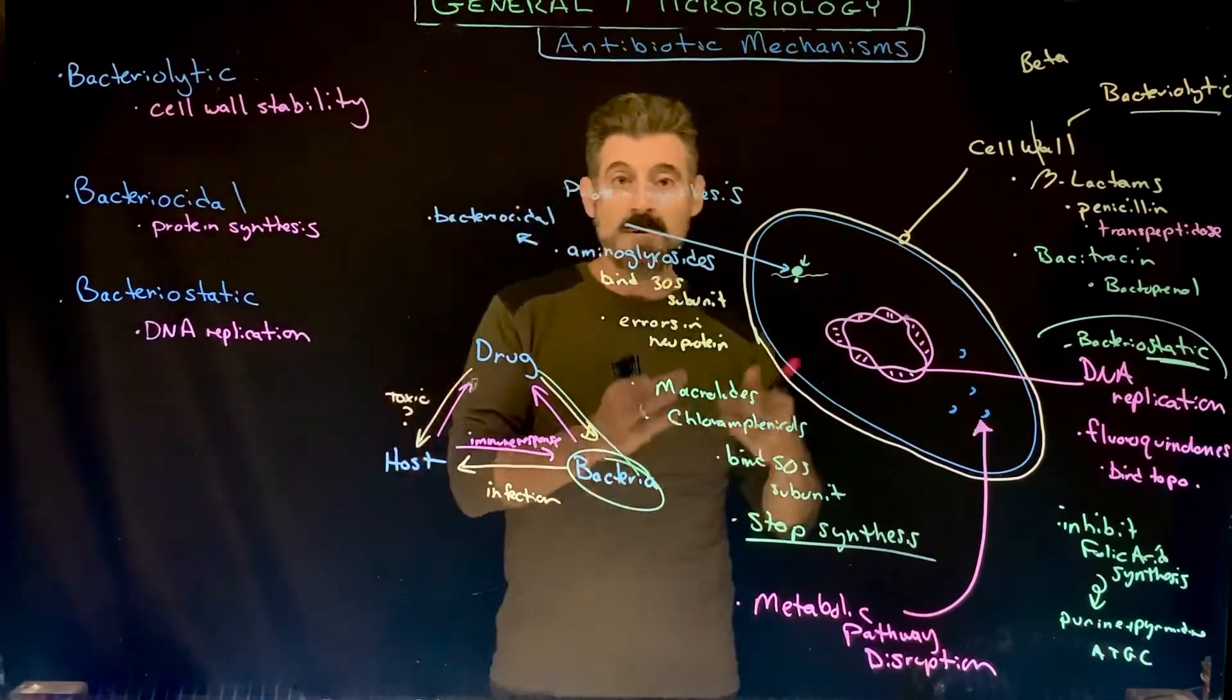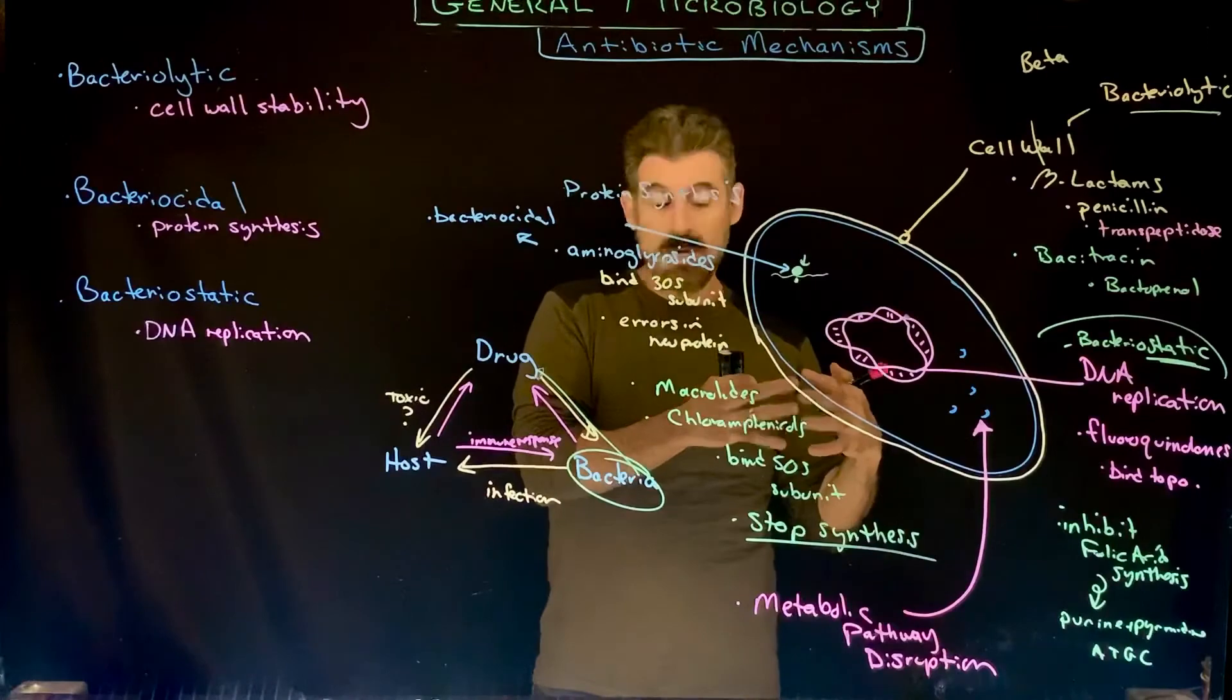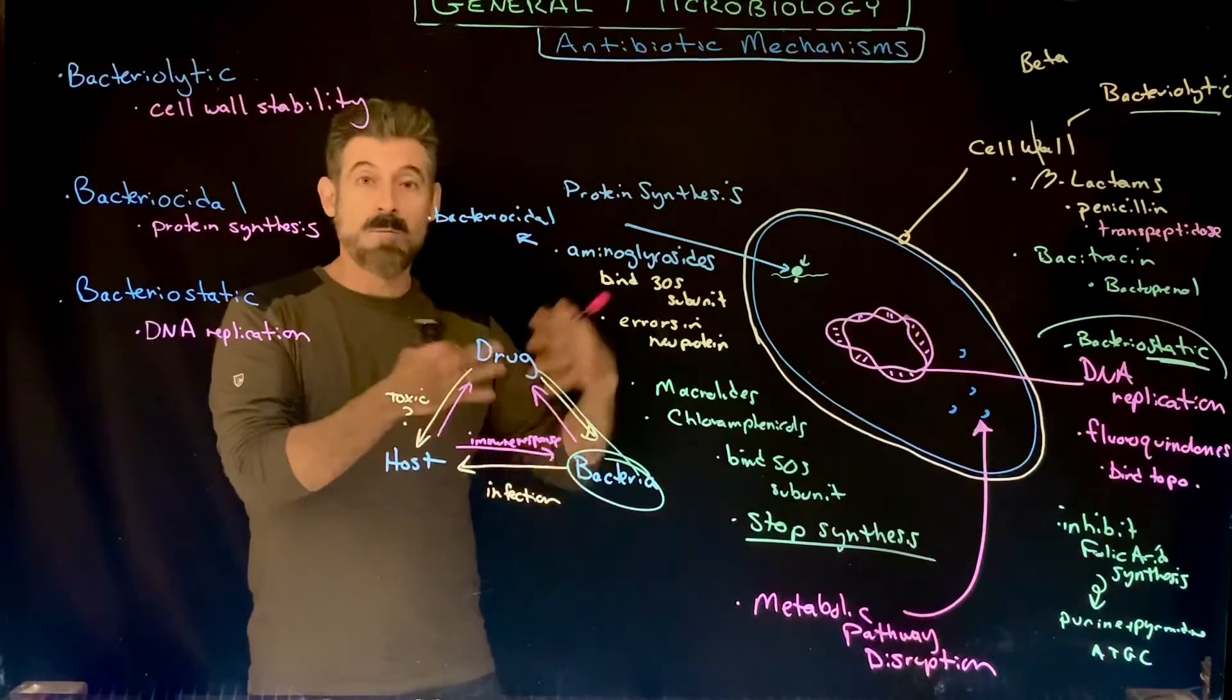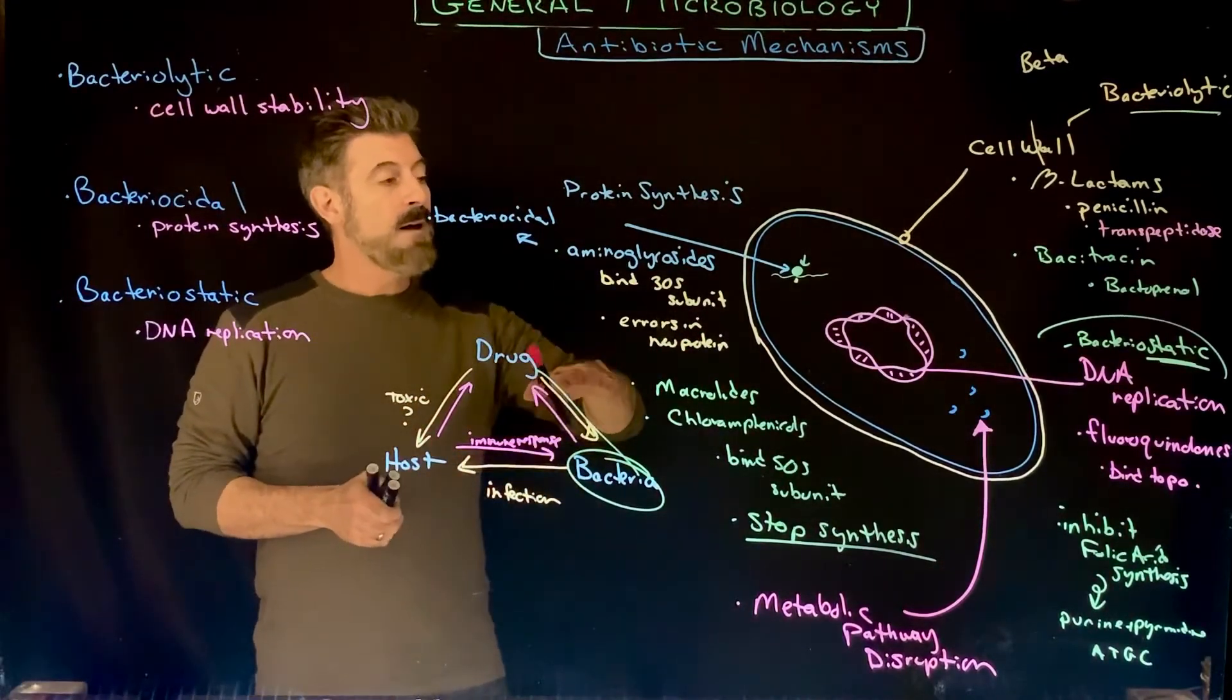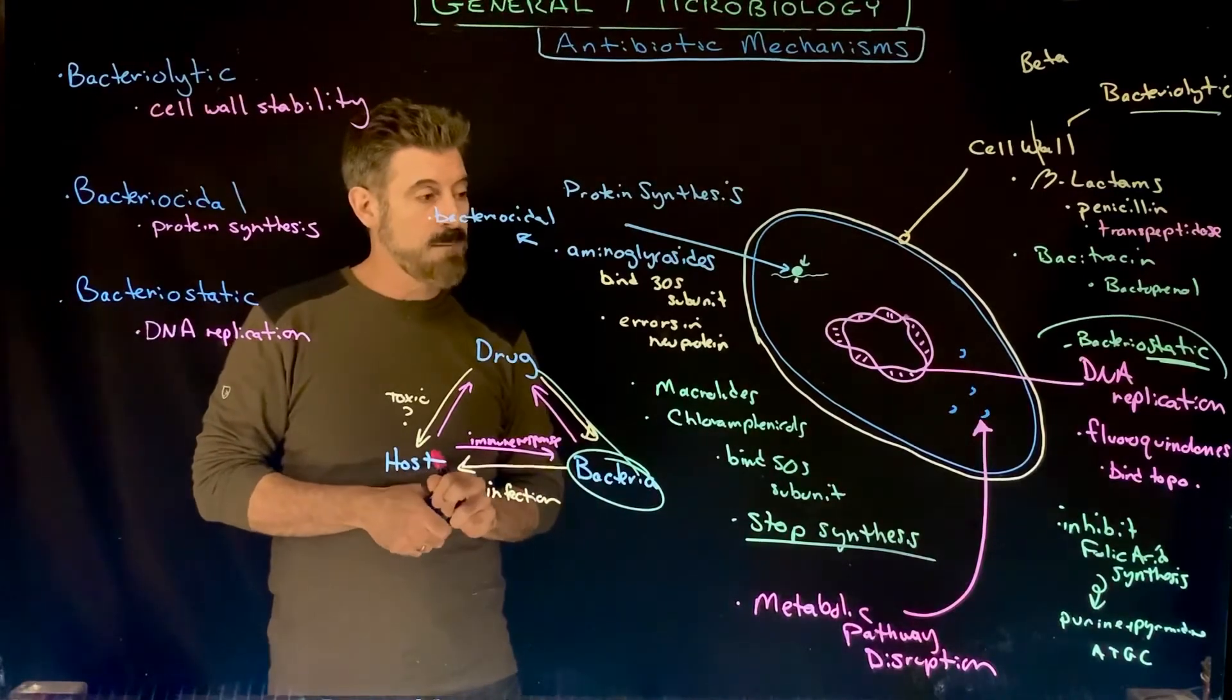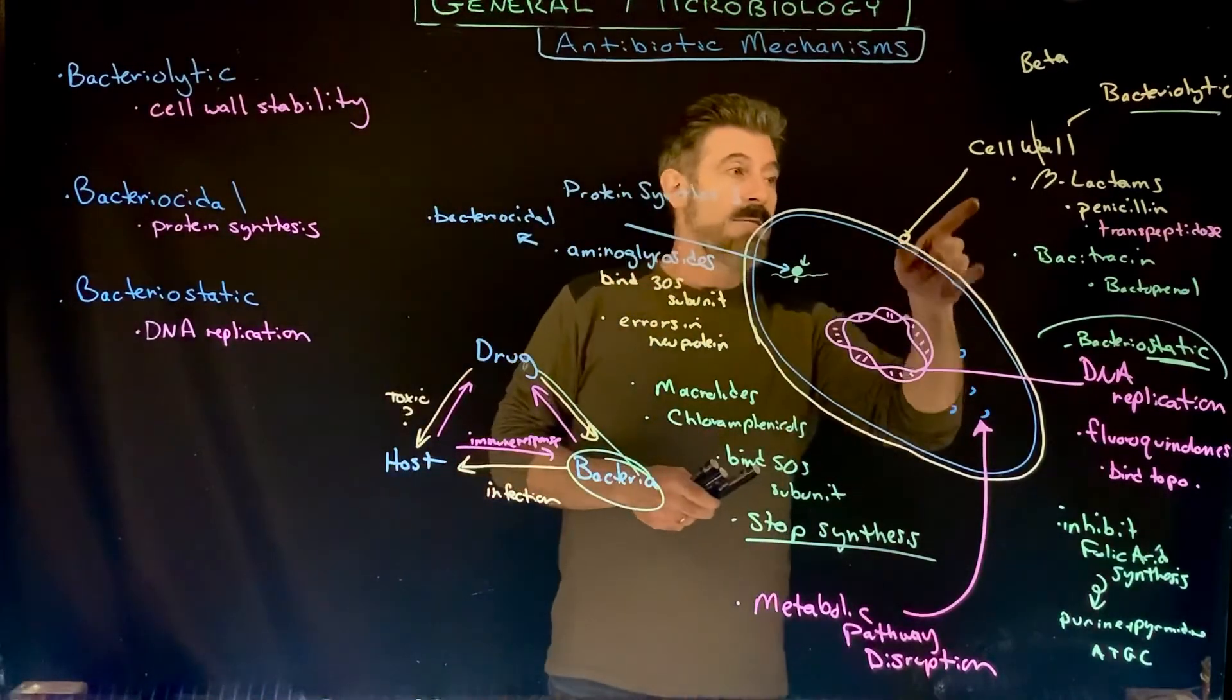Then we have those that are bacteriostatic, ones that are not going to kill the cell, they're just going to halt the cell's ability to divide. If they were removed, like I showed in the graph in the previous talk, then the cells can continue to divide again. They'll just go away if the agent was removed or they were removed from the environment with that particular chemical agent.